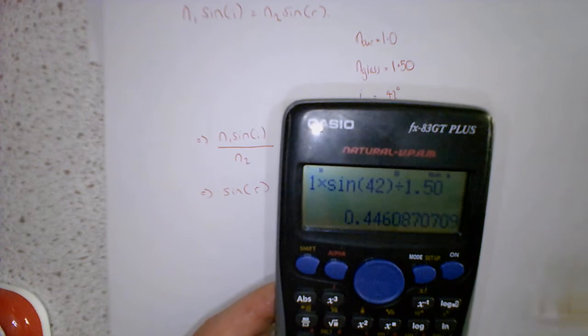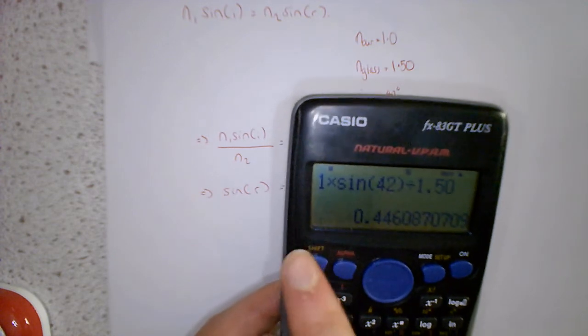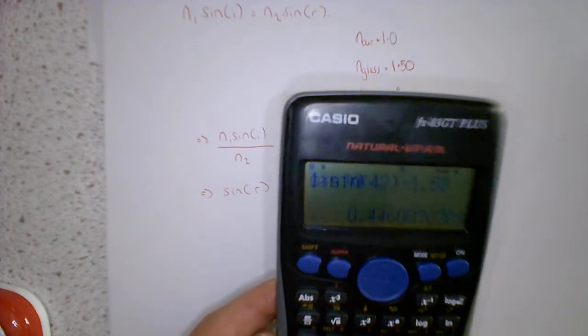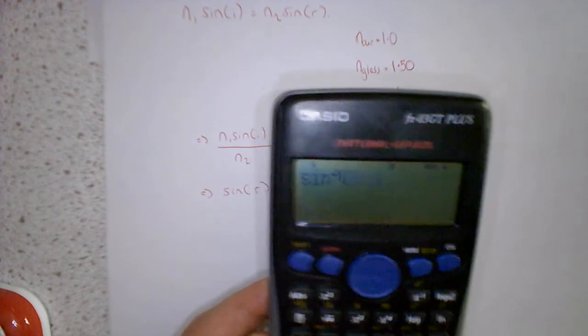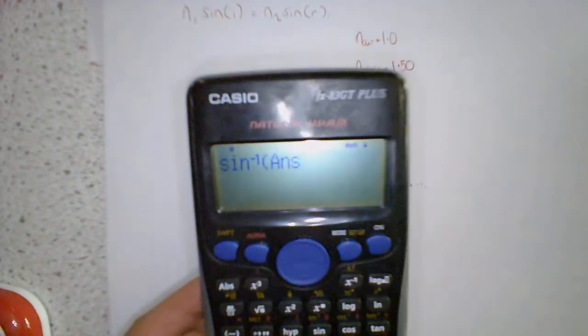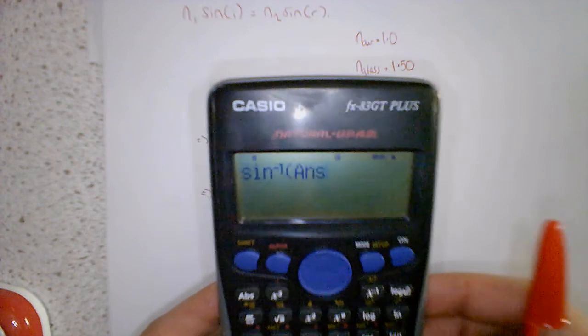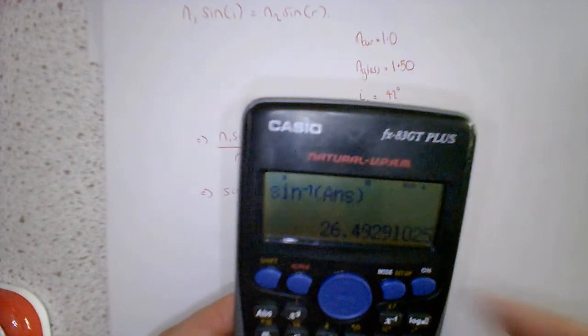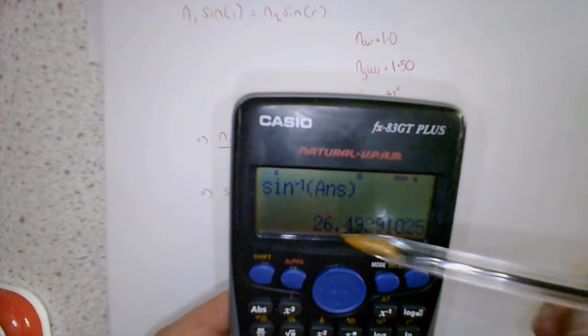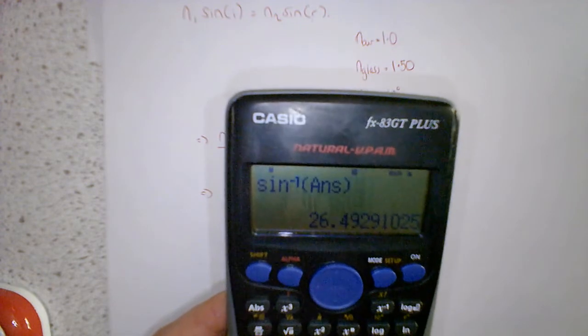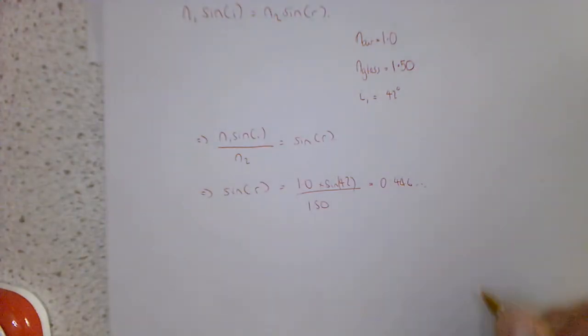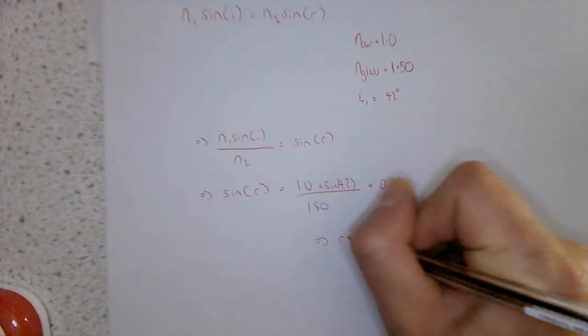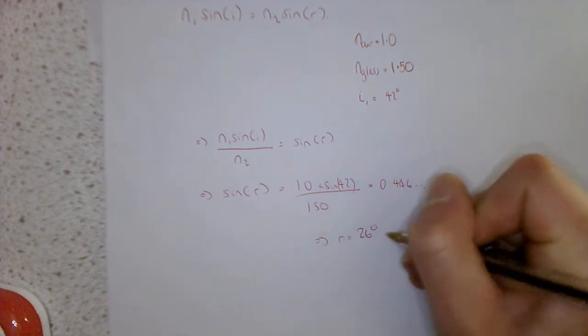So this is what sine of R is. So if we want to find what R is, we have to do the inverse sine. So we press shift, sine. And then we press the answer key. So it's going to take the inverse sine of our answer. So we can see our angle of refraction should be about 26 degrees. So that means R is about 26 degrees.